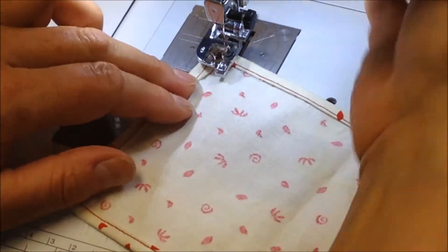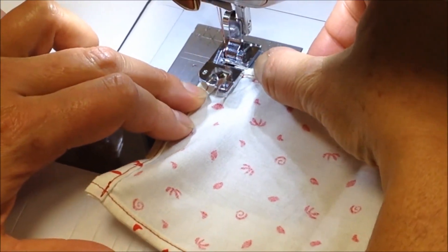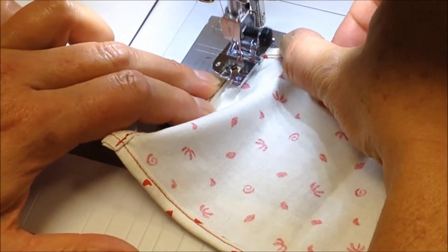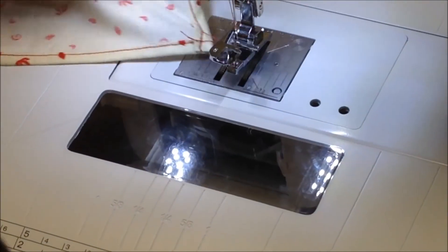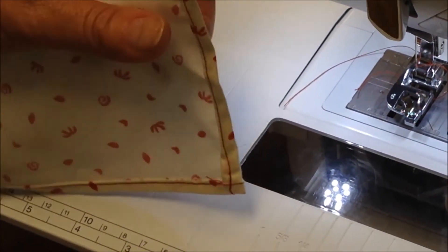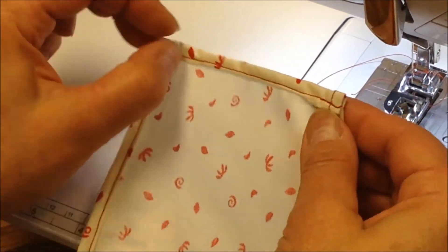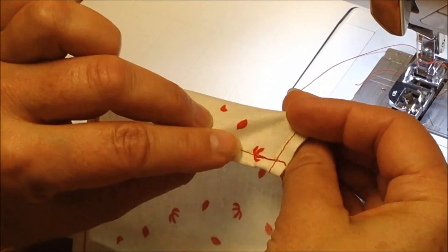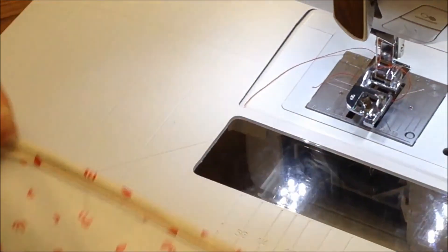Needle is down. Raise the presser foot. A couple of stitches. And then we're finished. Being in control of your corners will make a nice 90 degree without any of the fabric hanging over the edge. Have a great day.